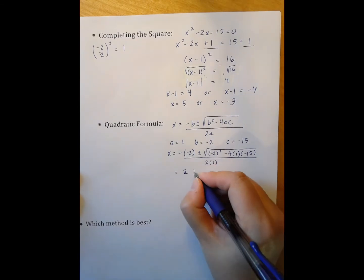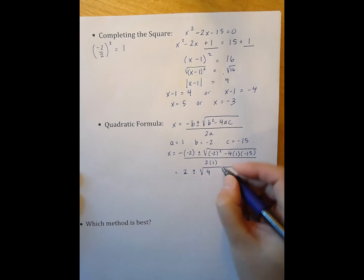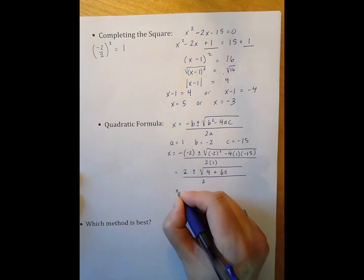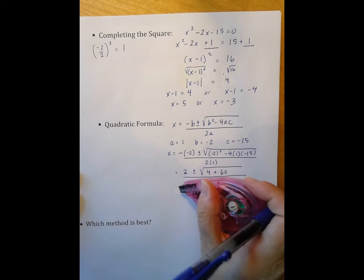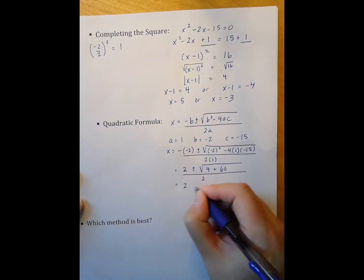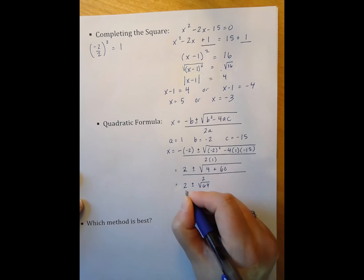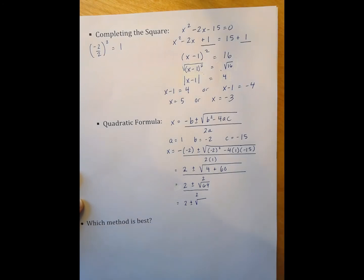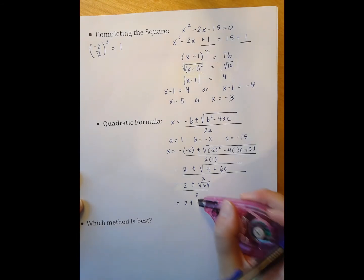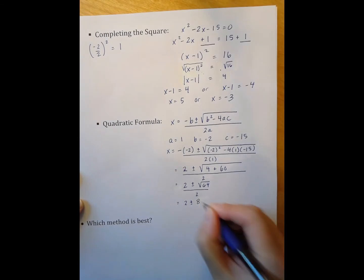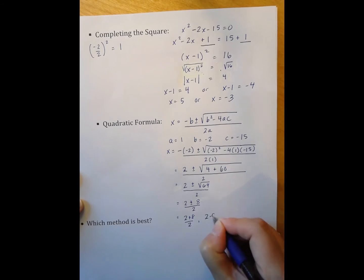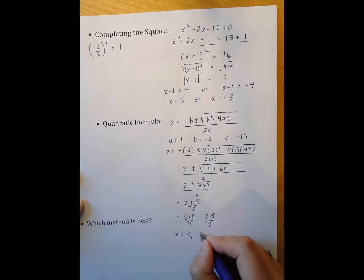I have positive 2 plus or minus the square root of 4 plus 60 all over 2. x equals 2 plus or minus the square root of 64 all over 2. That's 2 plus or minus the square root. Excuse me. I'm going to be having some trouble using my square roots today. 2 plus or minus 8 all over 2. So that's 2 plus 8 over 2 and 2 minus 8 over 2 which means x equals 10 over 2 or negative 6 over 2.